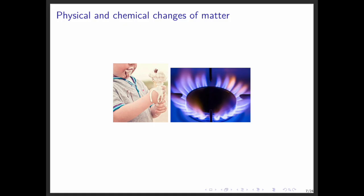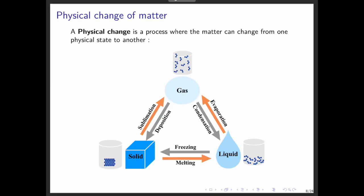Now let's take a closer look at physical changes. A common example is when matter changes its state. By heating, a solid turns into a liquid, which is melting, or a liquid turns into a gas, which is evaporation. By cooling, a gas turns into a liquid, which is condensation, or a liquid turns into a solid, which is freezing. These processes change the physical state, but the chemical composition remains the same. Ice, water, and steam are all H2O.